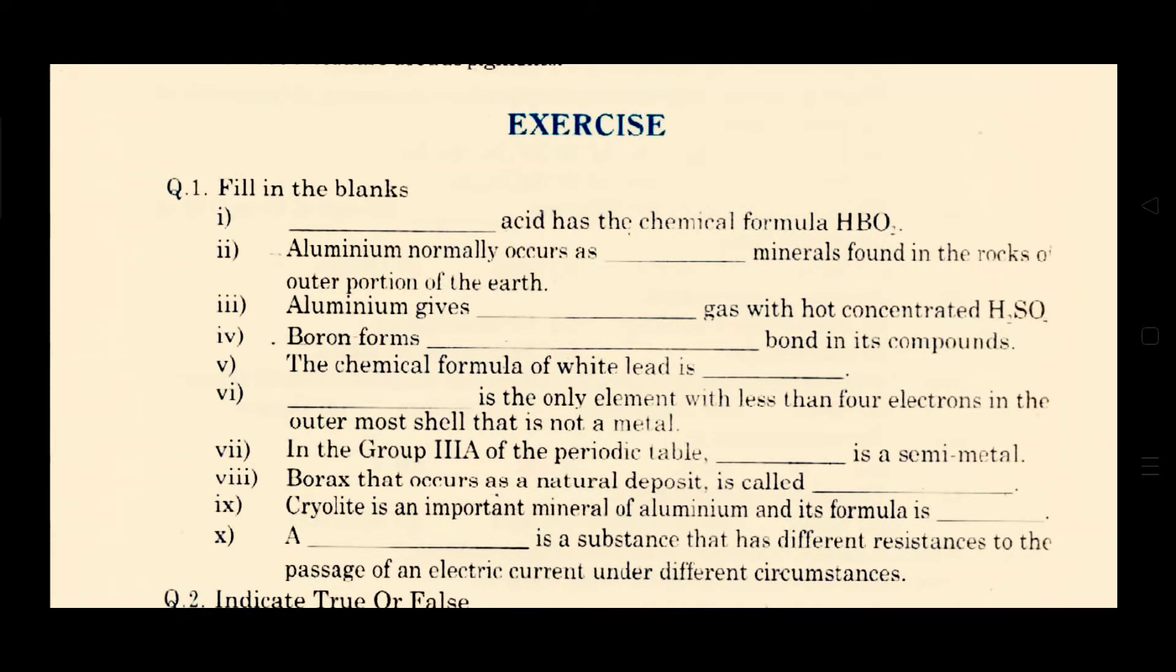And the next fill in the blank is aluminium naturally occurs as dash mineral found in the rocks or outer portion of the earth. So the name of that mineral is alumino silicate.